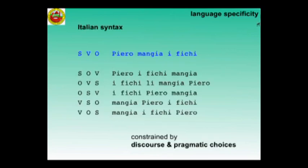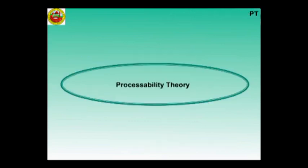In terms of syntax, Italian is an SVO language. On the other hand, all other possible orders are also grammatical. Some are quite awkward, depending very strongly on prosody. Nevertheless, they do exist.